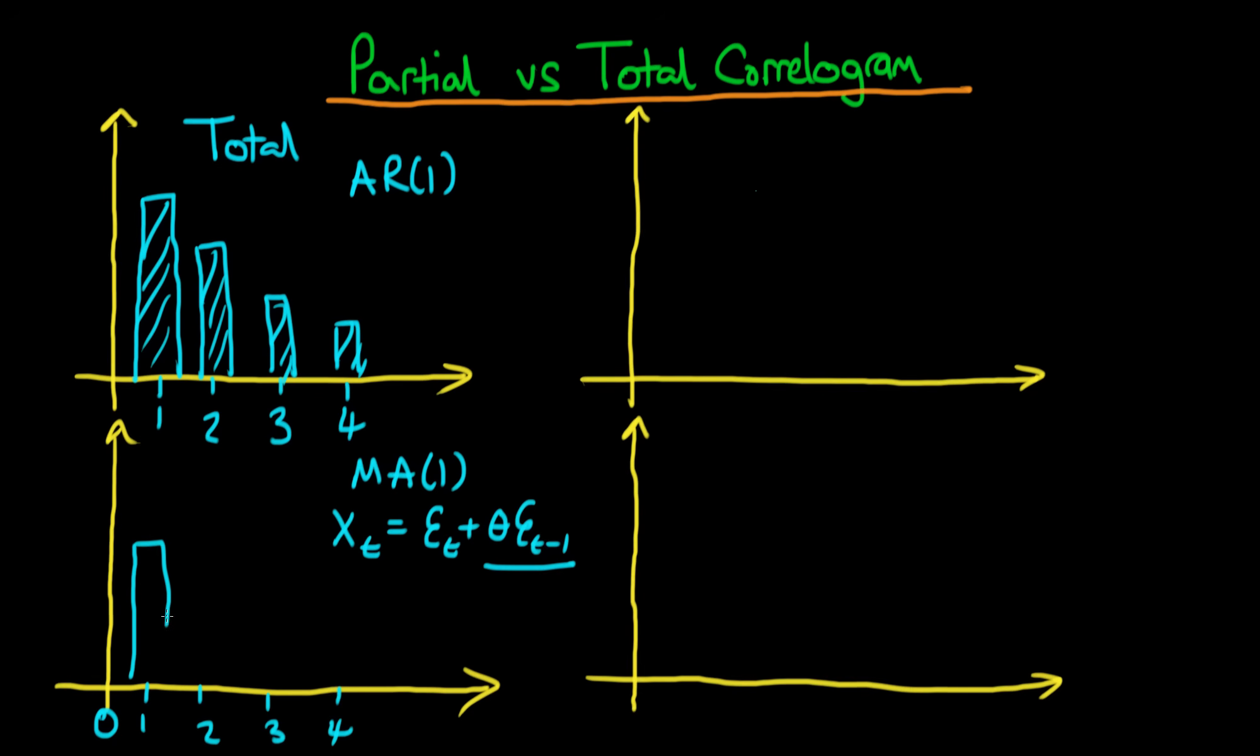We're going to have some correlation between these two variables and the strength of the correlation is going to be determined by the parameter theta. Unlike the AR1 process which I've drawn up here, an MA1 process after the first lag the total correlation between that variable and itself lagged two or three or four or more times is essentially zero.